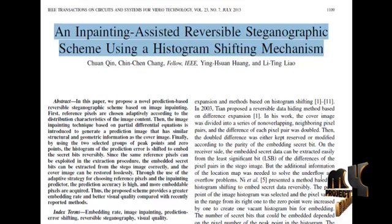In our proposed method, we implement a prediction-based reversible steganography scheme based on image inpainting. In this scheme, the reference pixels are adaptively selected according to the distribution characteristics of the content of the image. In our scheme, fewer reference pixels are chosen in the smooth regions of the cover images, while more reference pixels are chosen in the complex regions.